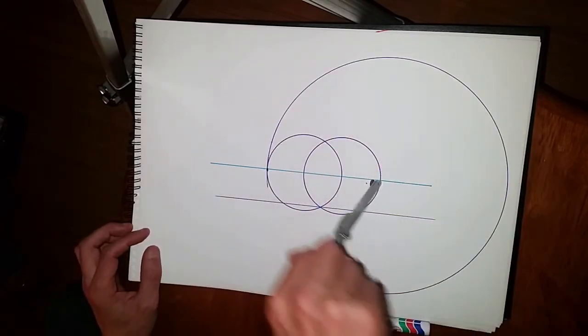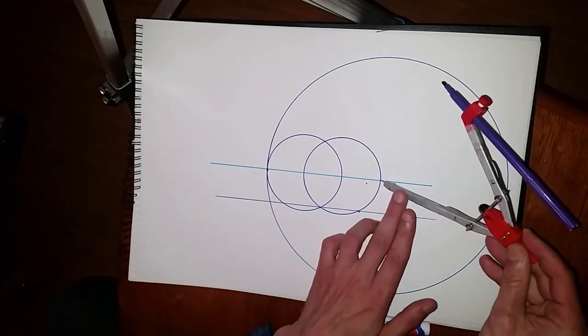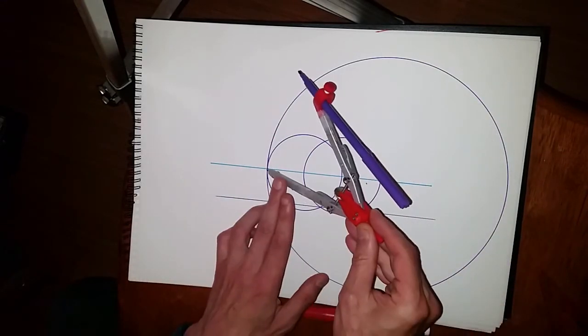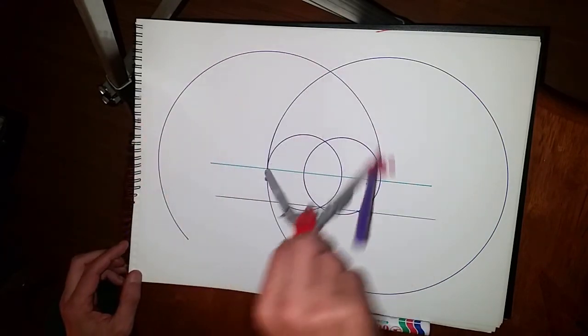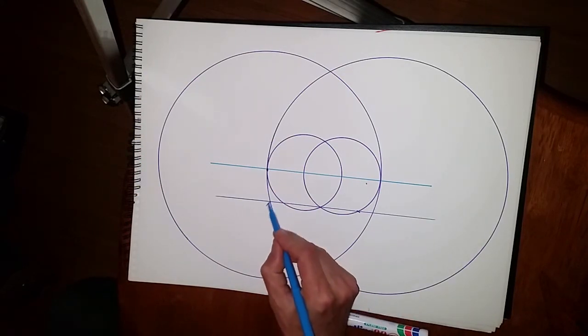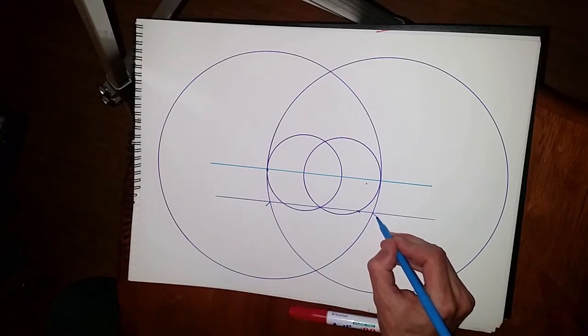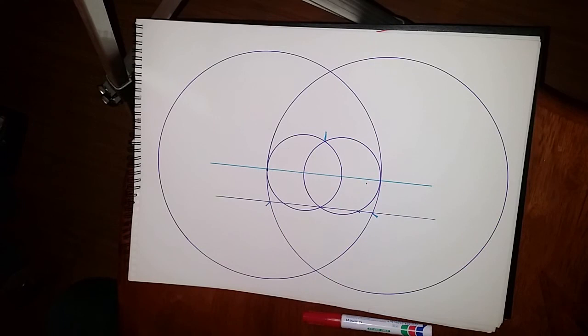So now we draw another Vesica, which encompasses again the center of the first circle here, and the second circle on the edge of the first. And so we've got a Vesica inside a Vesica. And now we have this point here, here, and here gives us our triangle.